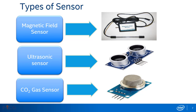Magnetic field sensors are used for power steering, security, and current measurements on transmission lines. An ultrasonic sensor is a device that can measure the distance to an object by using sound waves — it measures distance by sending out a sound wave at a specific frequency and listening for that sound wave to bounce back. A carbon dioxide sensor, or CO2 sensor, is an instrument for the measurement of carbon dioxide gas, and measuring CO2 is important in monitoring indoor air quality.